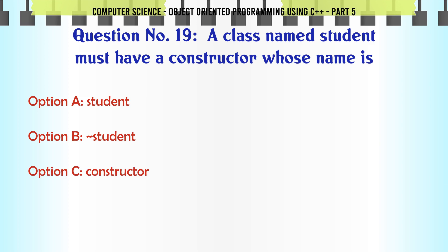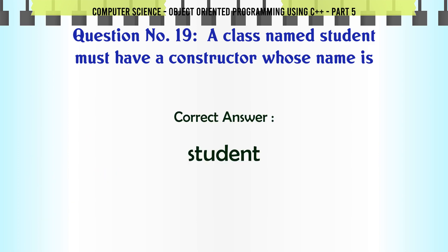A class named Student must have a constructor whose name is. A. Student. B. Student. C. Constructor. D. Any legal C++ name. The correct answer is: Student.